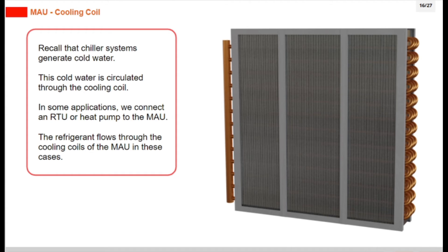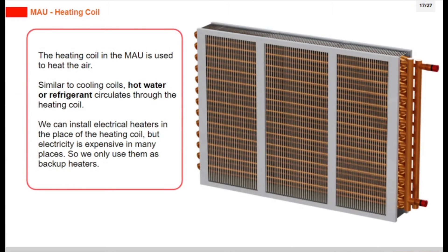The heating coil in the MAU is used to heat the air. Similar to cooling coils, hot water or refrigerant circulates through the heating coil. We can install electrical heaters in place of the heating coil, but electricity is expensive in many places, so we only use them as backup heaters.